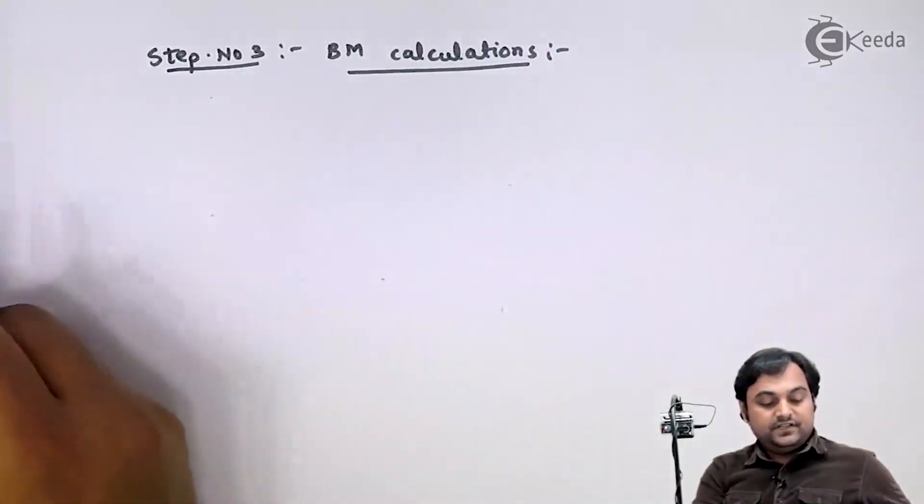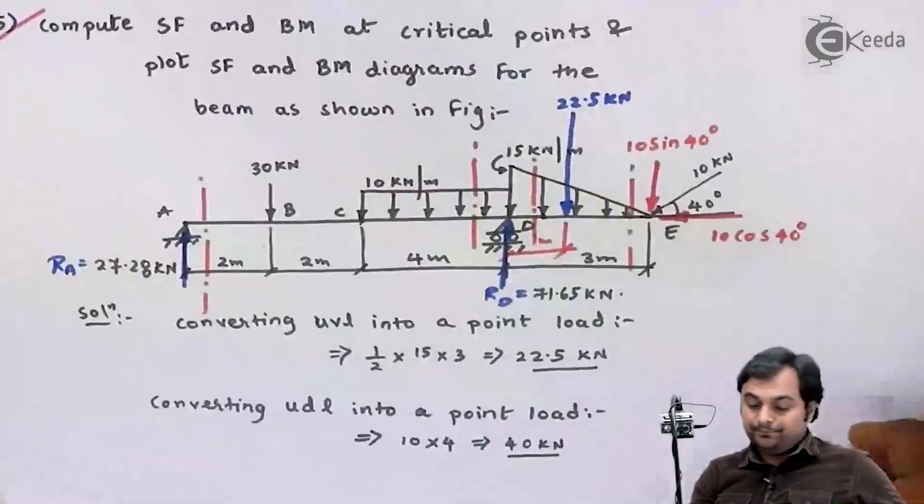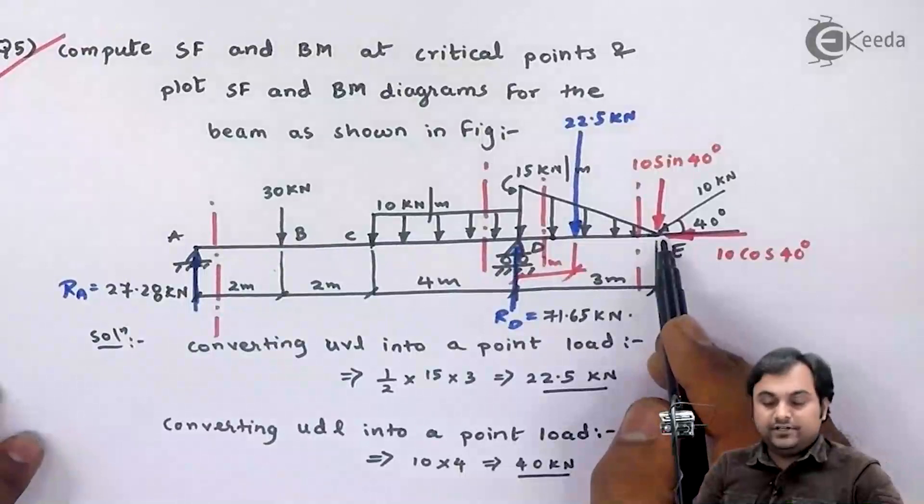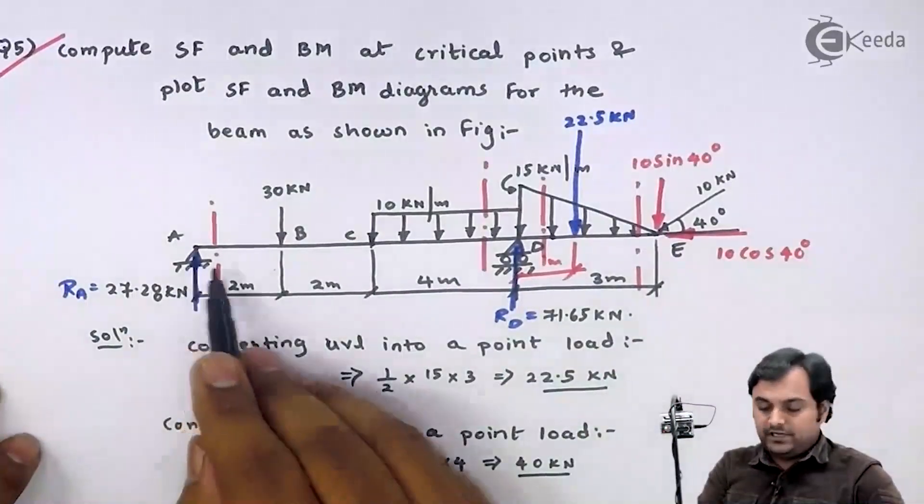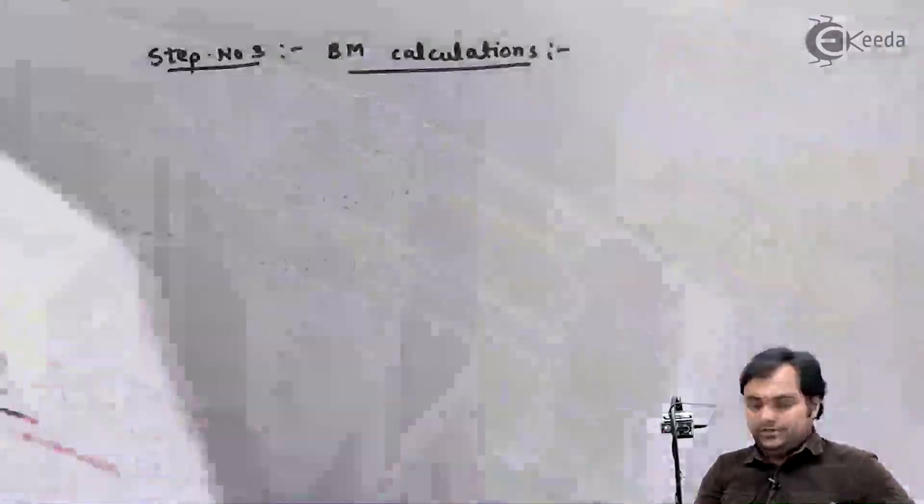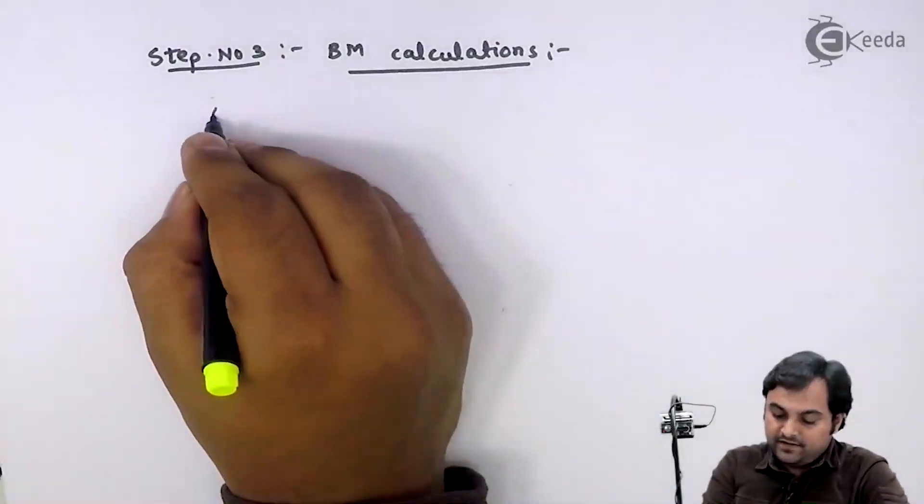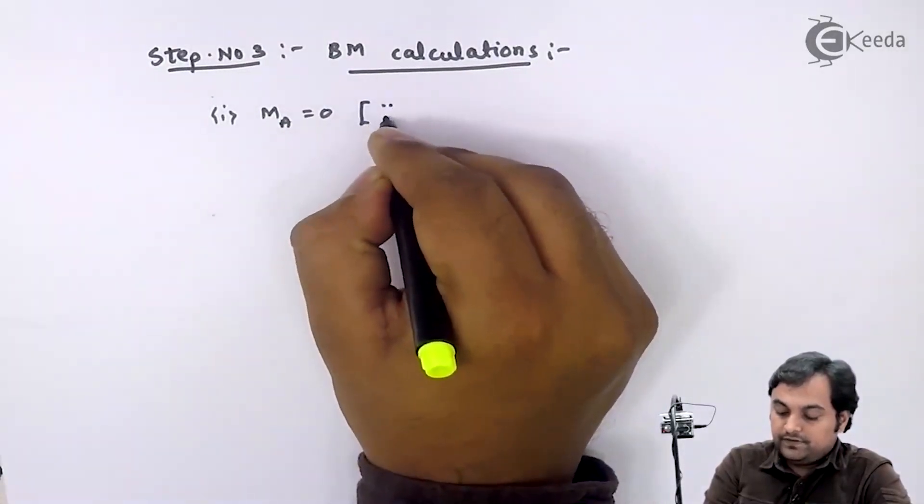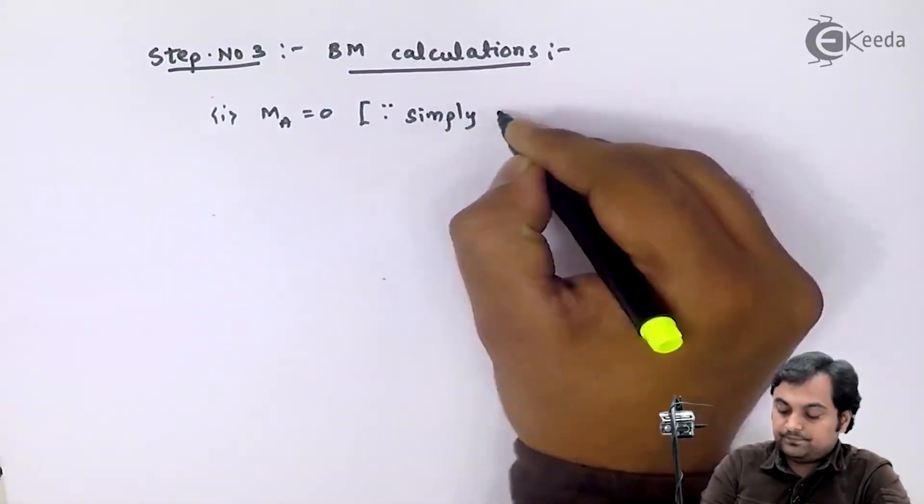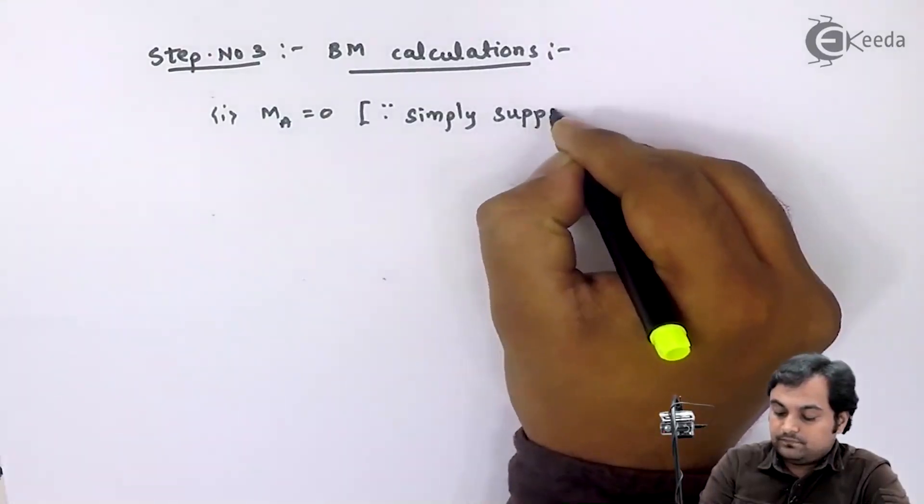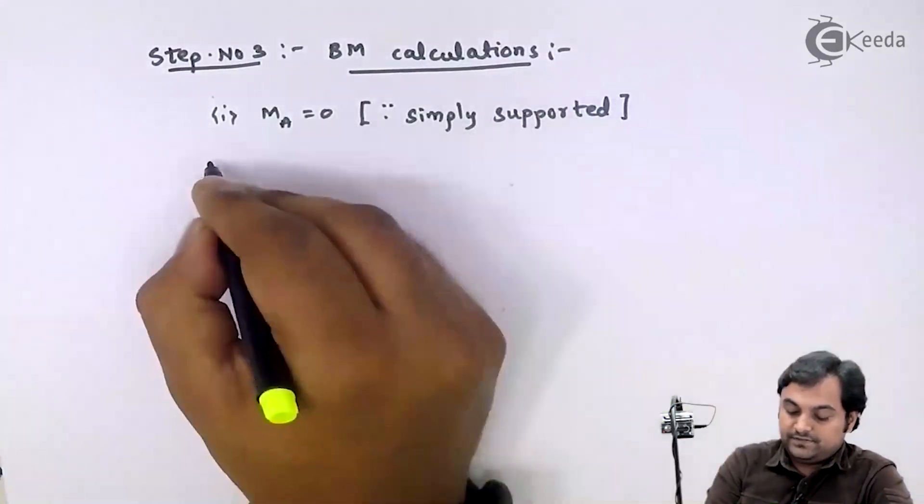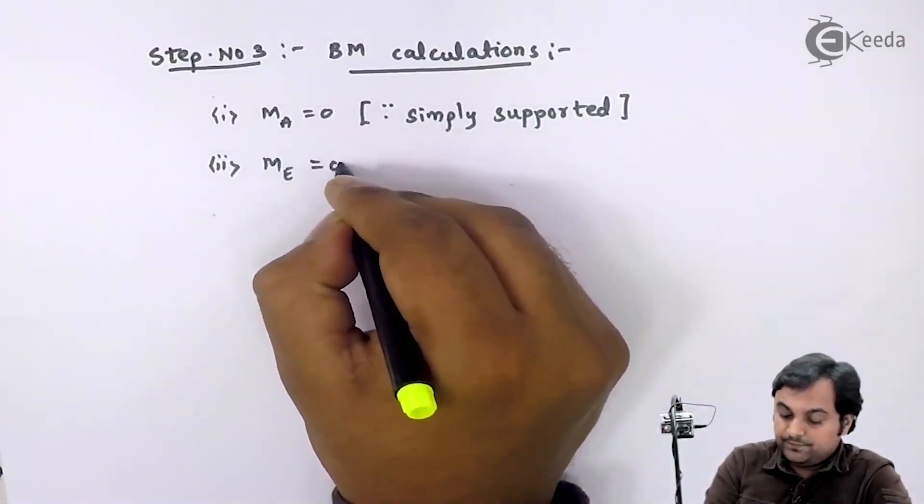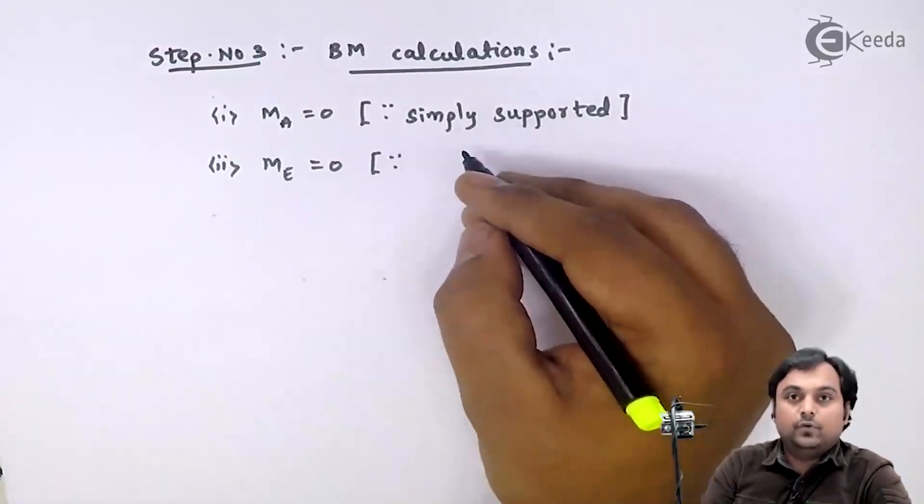Here as we can see in the given beam, it is simply supported at one end and free at the other end. So at the simply support and at the free support, bending moment will be 0. First moment at A is equal to 0 since it is simply supported. Next moment at E is equal to 0 since it is overhanging beam.